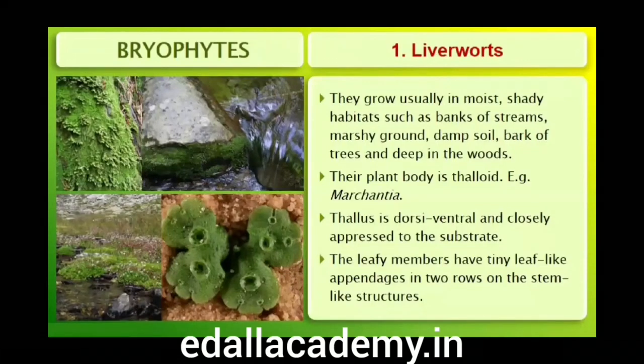Liverworts grow usually in moist, shady habitats such as banks of streams, marshy ground, damp soil, bark of trees and deep in the woods. The plant body of a liverwort is thalloid — for example, Marchantia. The thallus is dorsiventral and closely oppressed to the substrate. The leafy members have tiny leaf-like appendages in two rows on the stem-like structures.